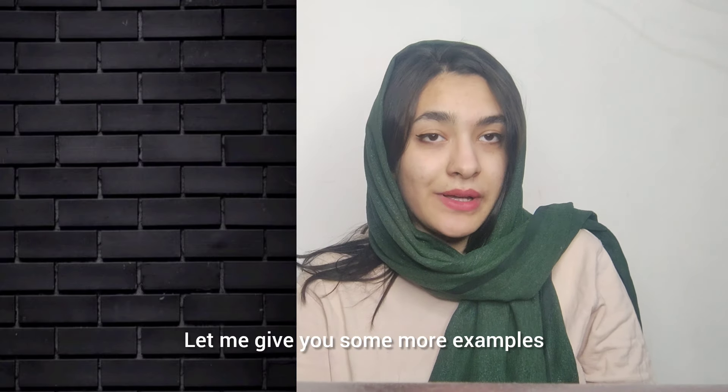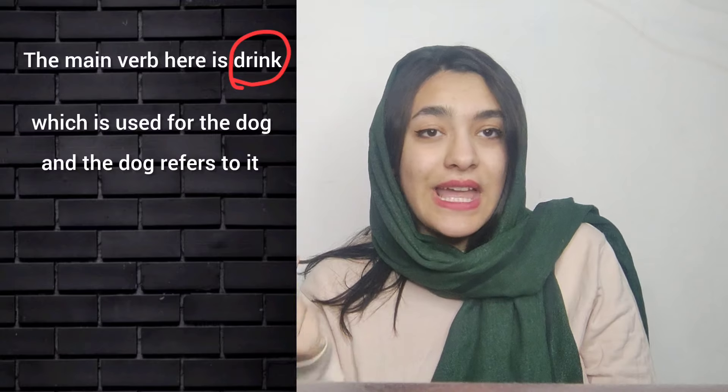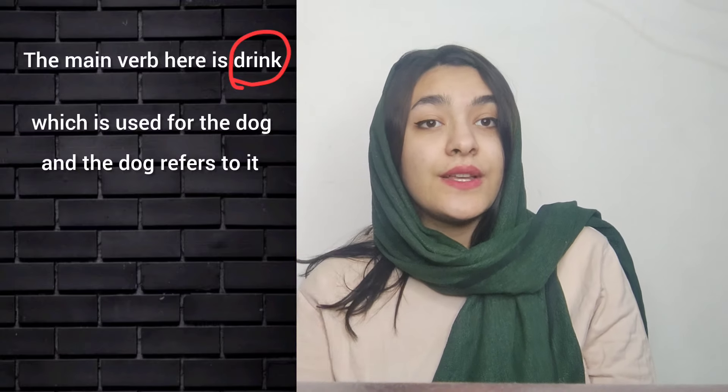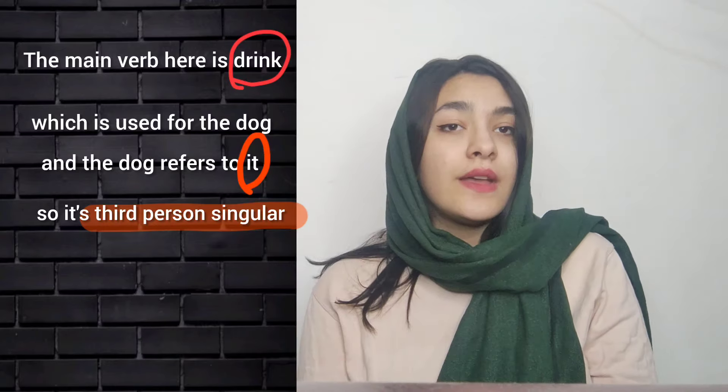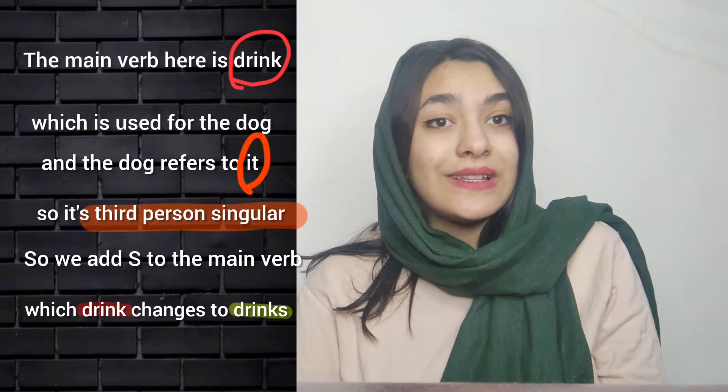Let me give you some more examples. The dog drinks water from its bowl. The main verb here is 'drink', which is used for 'the dog', and the dog refers to 'it', so it's third person singular. So we add S to the main verb, which means 'drink' changes to 'drinks'. Sarah eats dinner at 9 pm. Sarah refers to 'she' and is third person singular, so we add S to the main verb — it becomes 'eats'.